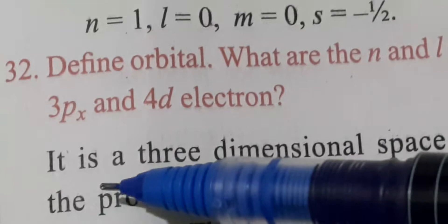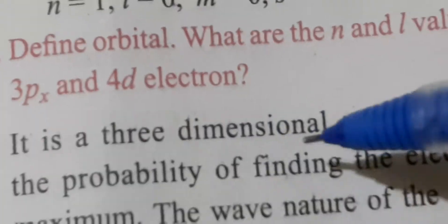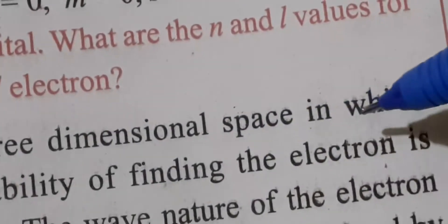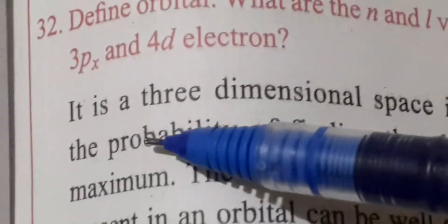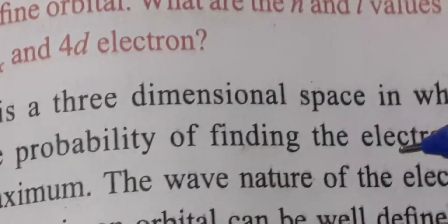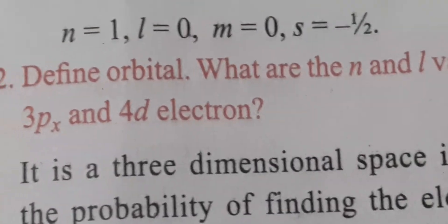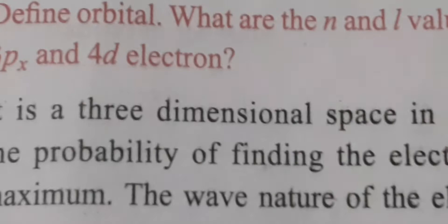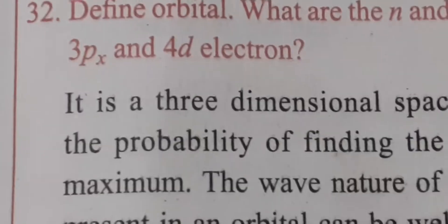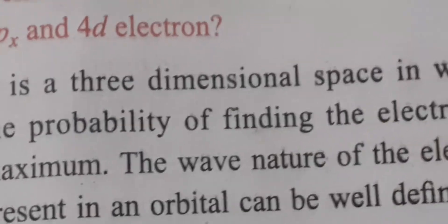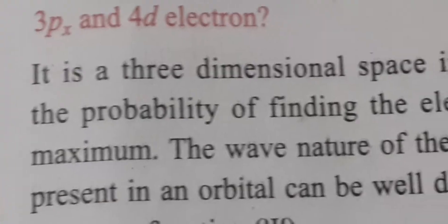What is orbital? Orbital is a three-dimensional space in which the probability of finding the electron is maximum.